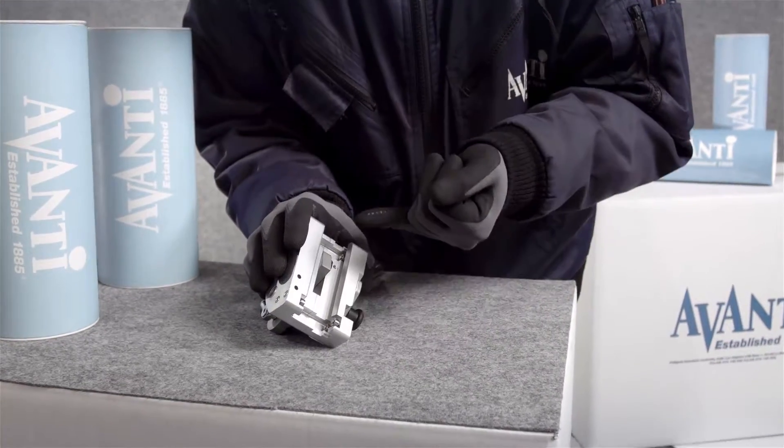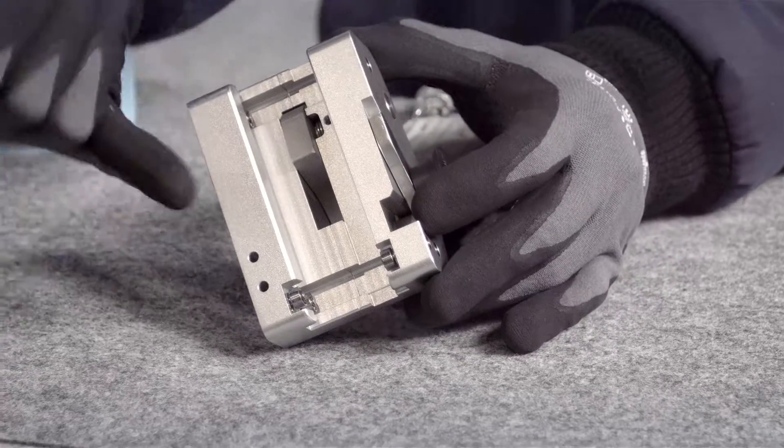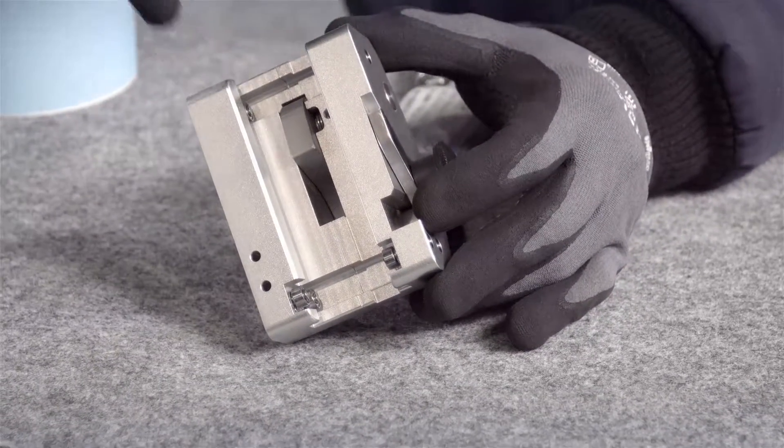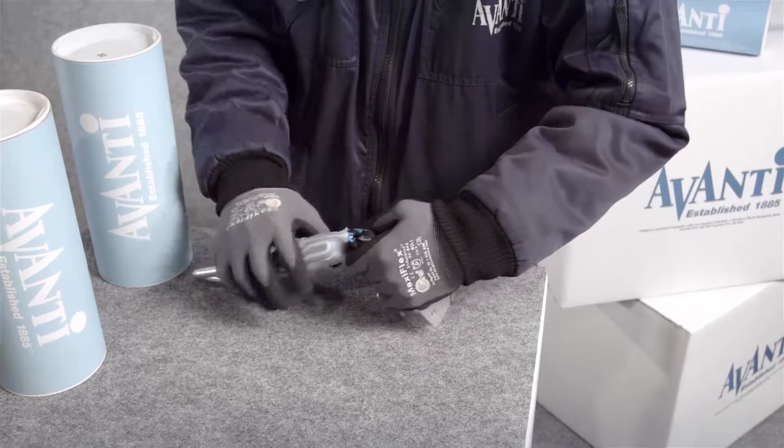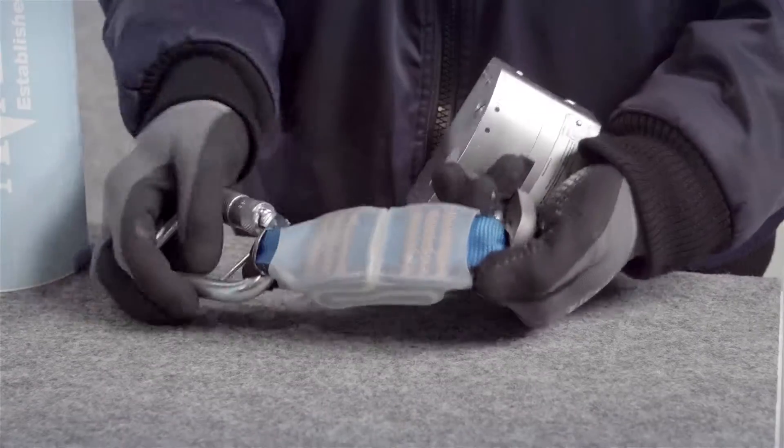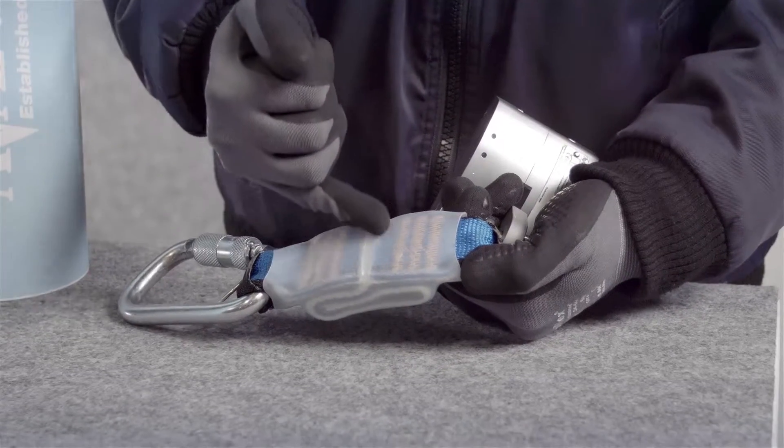Check that the six rollers are present and free of damage. Also check that the shock absorber does not show any fractures, broken stitches, cuts or burns. Check that the foil cover is in line.